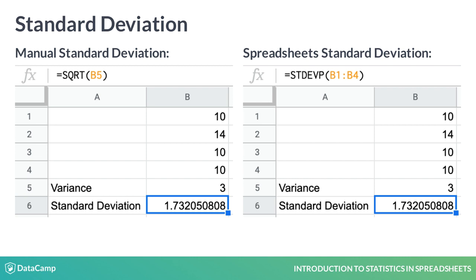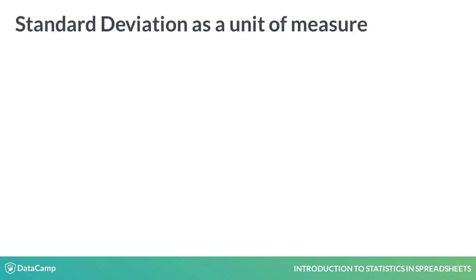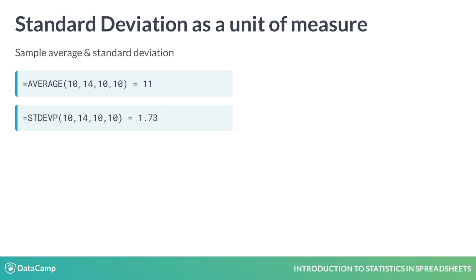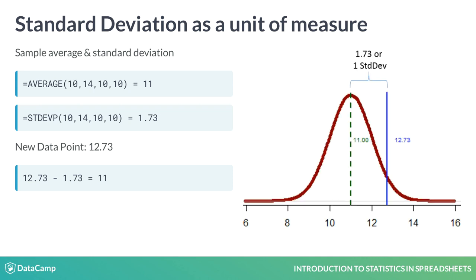Standard scores show you how a data point relates to the distribution. Our previous population mean was 11 and standard deviation was 1.73. Now we have a new data point, 12.73. Subtracting the standard deviation, 12.73 minus 1.73, you get back to the mean of 11. Thus, this new data point is exactly one standard deviation away from the mean.